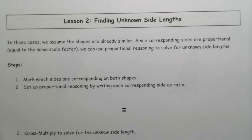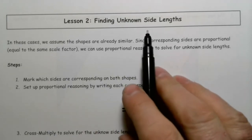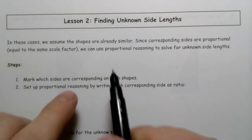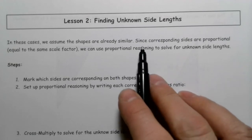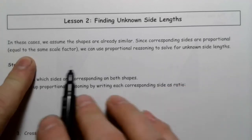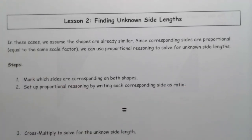In this video, we're going to be looking at similar figures and find an unknown side length. We're going to assume that what we're looking at are already similar figures, and there's a side that we don't know. Since corresponding sides are proportional — meaning they are equal to the same scale factor — we can use proportional reasoning to find that unknown side length.